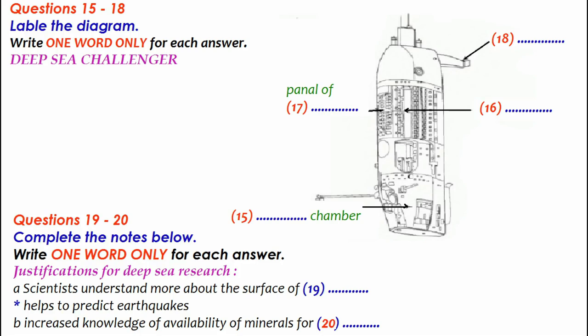You will now listen to the second part of the talk. Let's move on now to look at the submarine that took James Cameron so far down into the ocean. If you look at the drawing of the Challenger, you can see the pilot's chamber at the very bottom of the submarine. It's a very small section where the pilot sits and controls the sub and all the equipment on it.